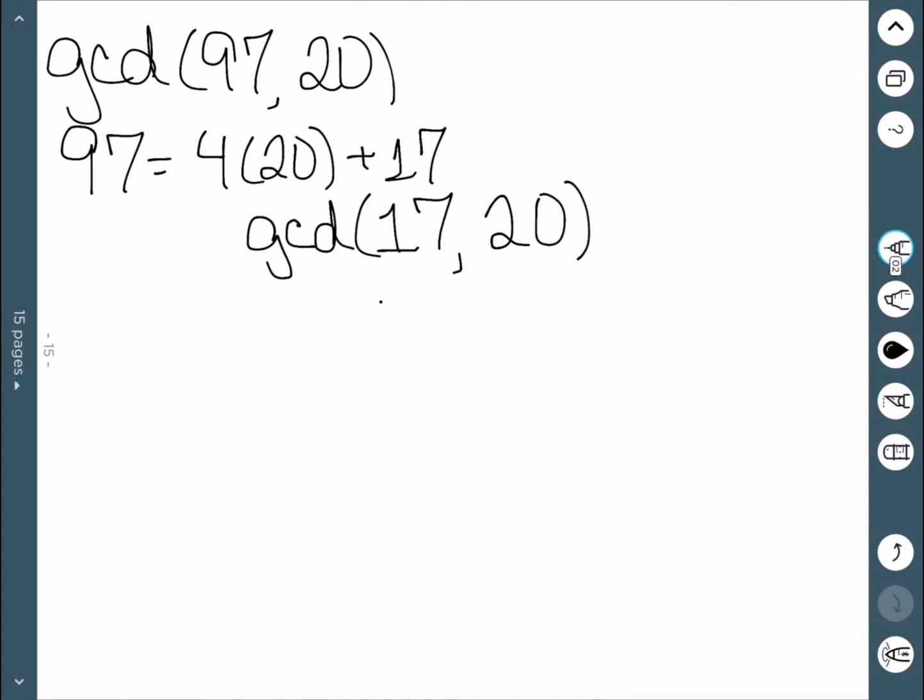And at this point, we should be able to see that these are relatively prime. The GCD is 1. In particular, we should be able to pick that up because 17 is a prime number, and it doesn't go in evenly into 20. So the only possible answers here would have been 1 or 17, and 17 doesn't work. Therefore, it must be 1.